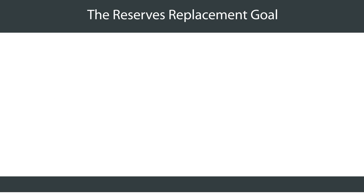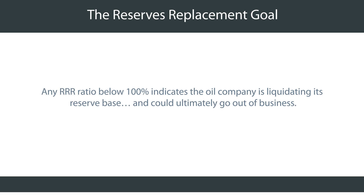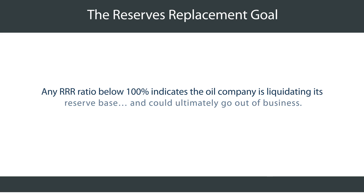Oil and gas operators want to replace more than 100% of their production volume during a year. Any RRR below 100% indicates the oil company is liquidating its reserve base and could ultimately go out of business.